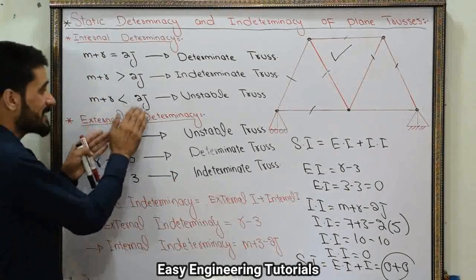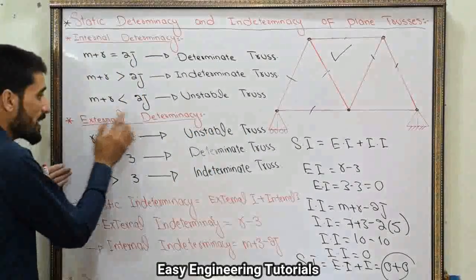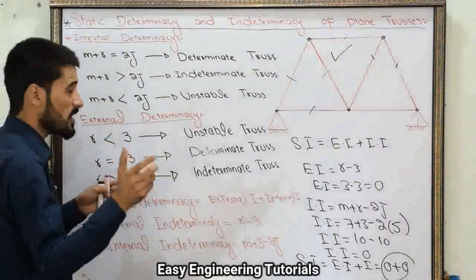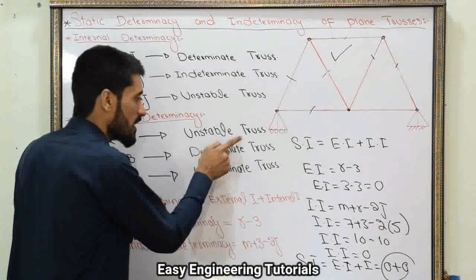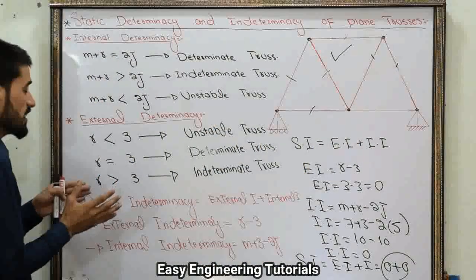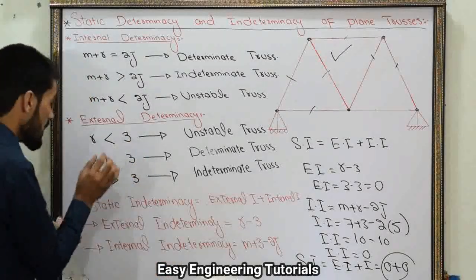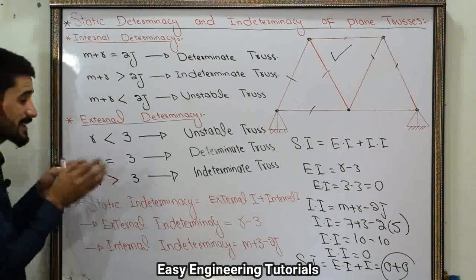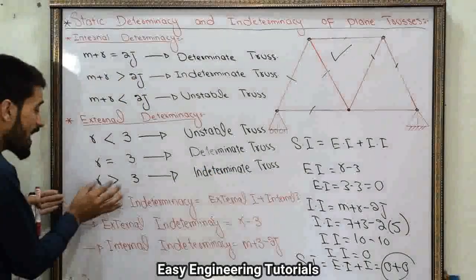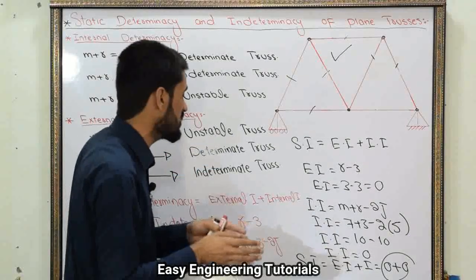Now for external determinacy: if R is less than 3, the truss is externally unstable, where R is the number of reaction forces and 3 is the number of equations of equilibrium. If R equals 3, the truss is externally determinate. If R is greater than 3, the truss is externally indeterminate.